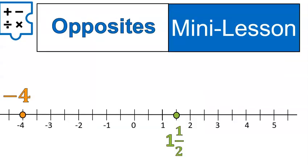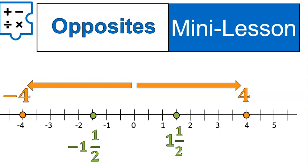Opposites are basically the changing of the sign. So the opposite of negative four is positive four. The opposite of one and one half is negative one and one half — it's changing the sign. As you can see on this number line, it is the same distance from zero only measured in the opposite direction. The easiest thing to do with opposites is just change the sign: if it's positive change it to negative, if it's negative change it to positive.